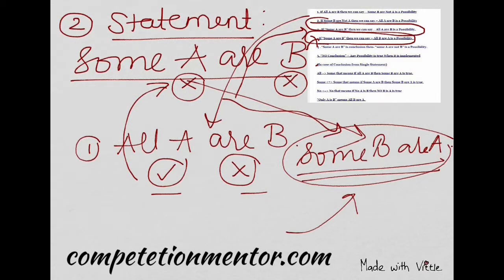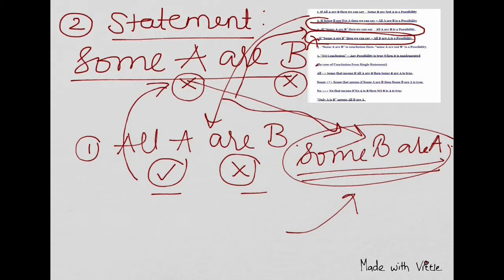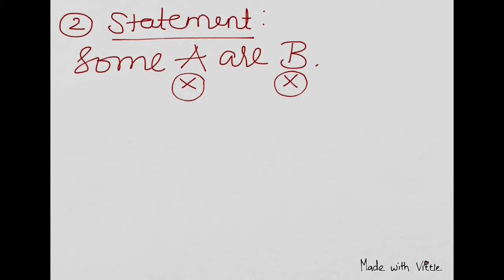Basically, it's like a little common sense. And you can tell this one. So this one, all A are B is a possibility. It doesn't follow concretely. It doesn't follow, but it's a possible case. Only when it's written possibility, then only you will say it's true. Otherwise it's false.